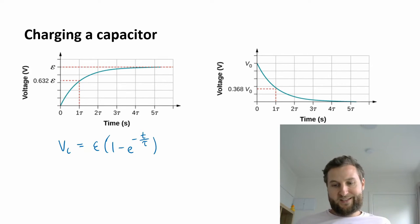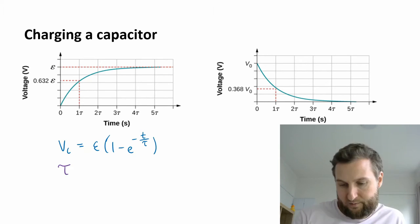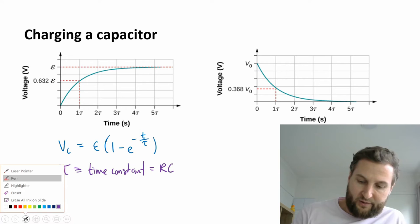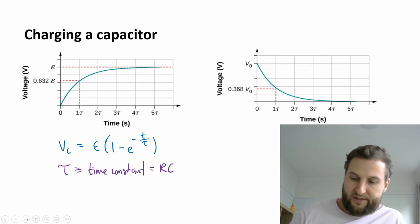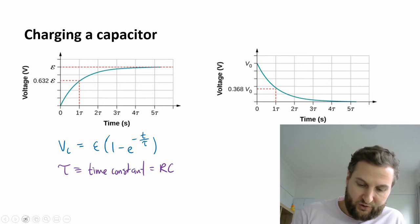Where t is in seconds, and tau is my time constant. And as equivalent, so tau the time constant is equivalent to just resistance times charge.